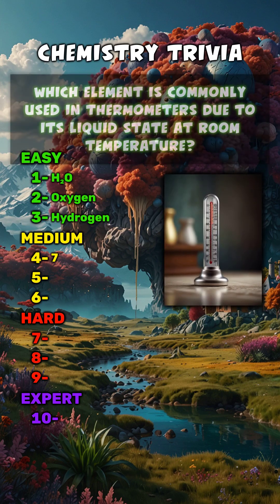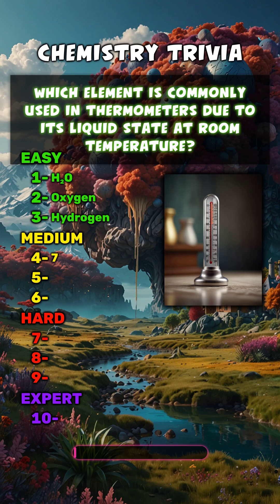Which element is commonly used in thermometers due to its liquid state at room temperature? Mercury.